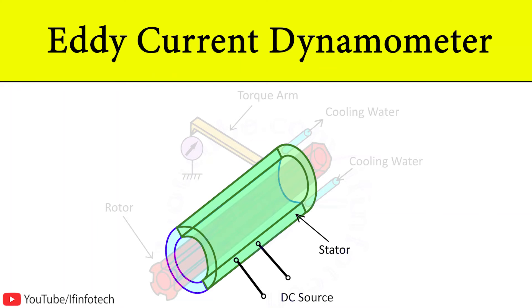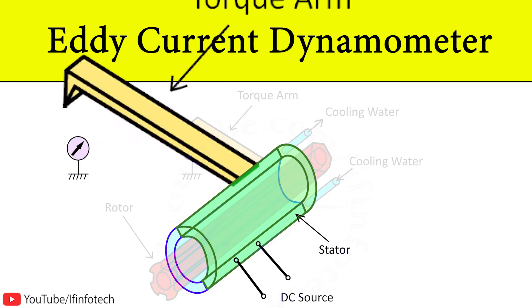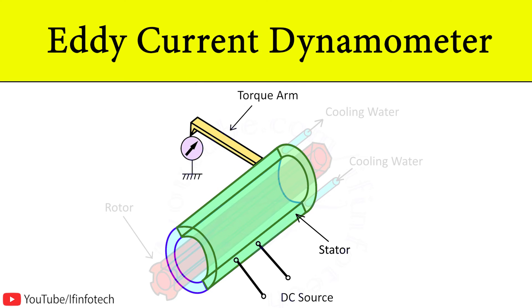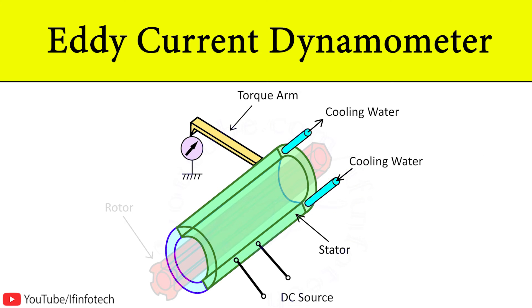The stator is mounted such that it permits free swing about its axis, and is provided with a torque arm which measures torque. To dissipate the generated heat, water is supplied in the stator casing.